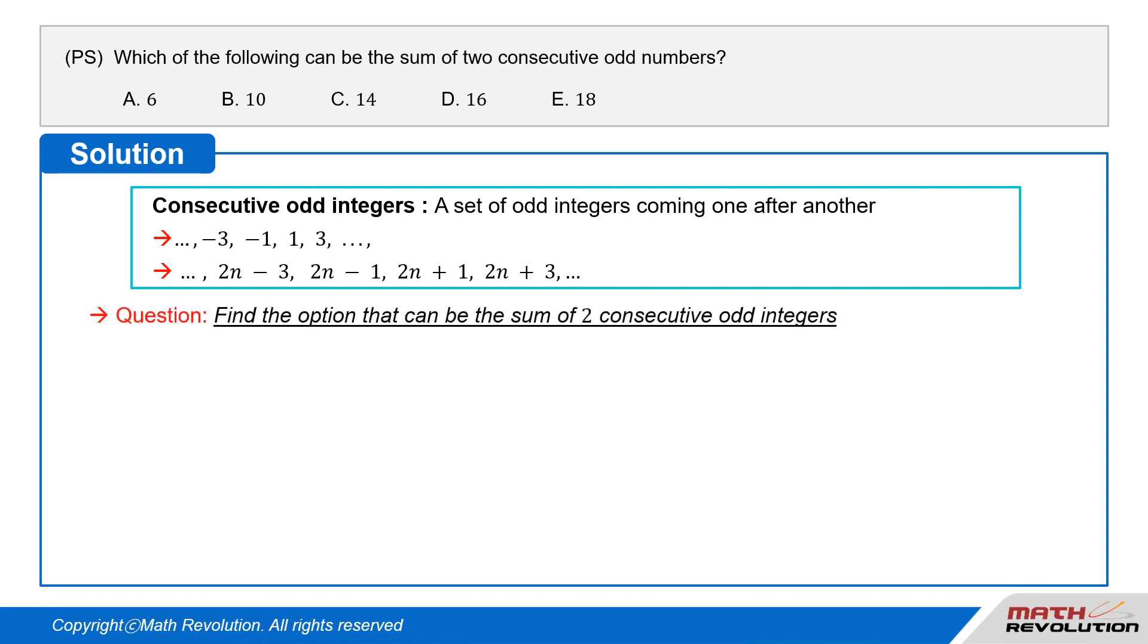We are required to find the option that can be the sum of two consecutive odd integers. Now, we can take two consecutive odd integers as 2 times n minus 1 and 2 times n plus 1, so their sum will be 2 times n minus 1 plus 2 times n plus 1 equals 4 times n. Thus,